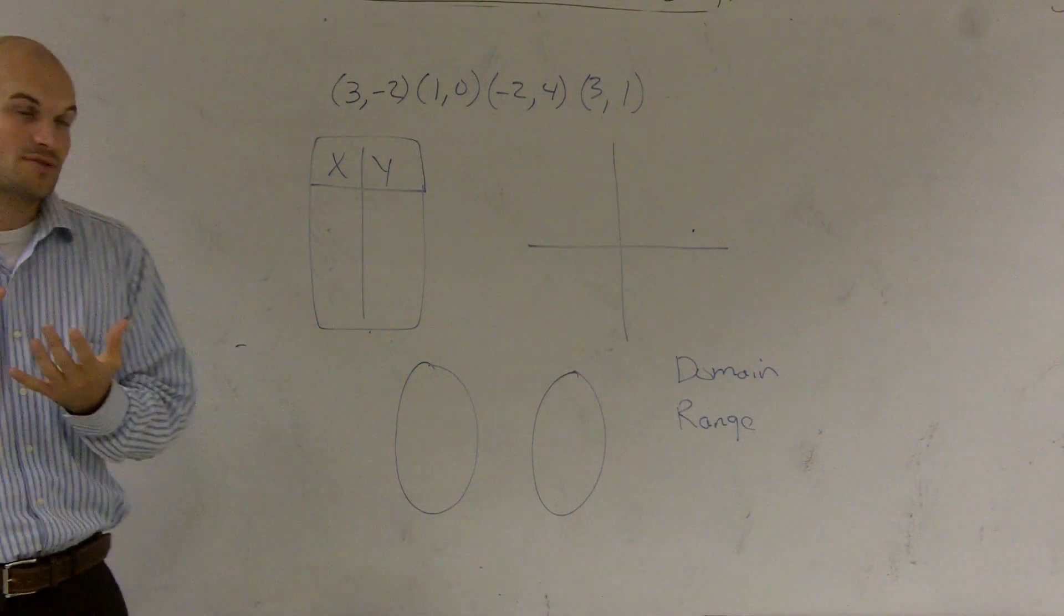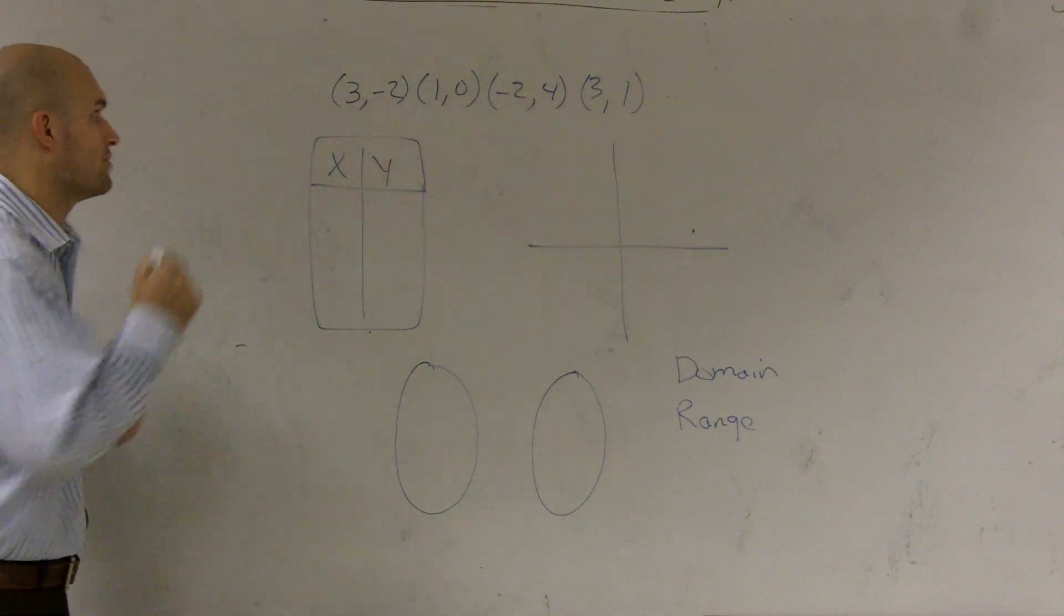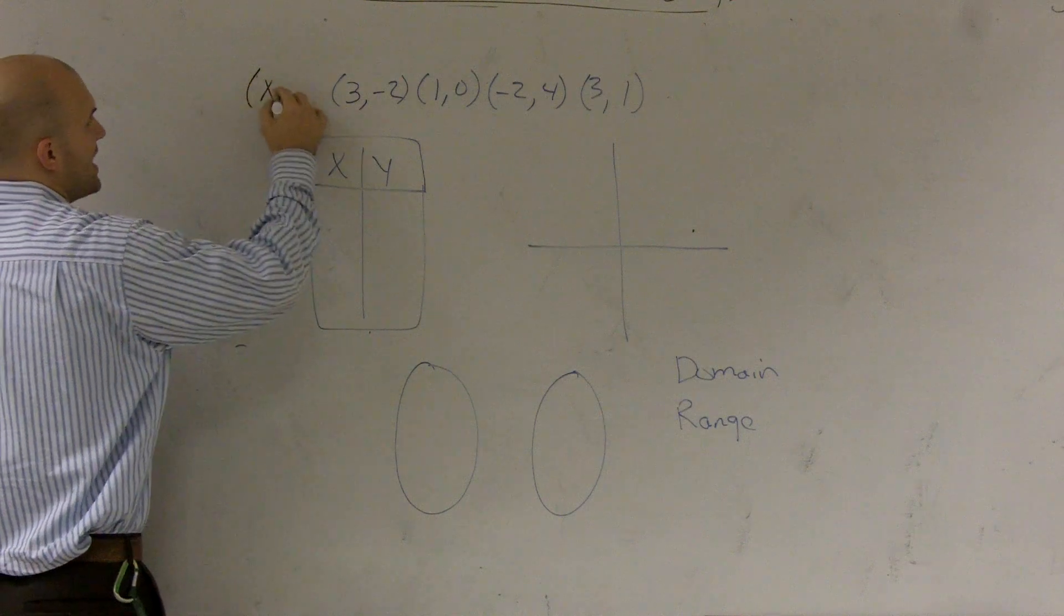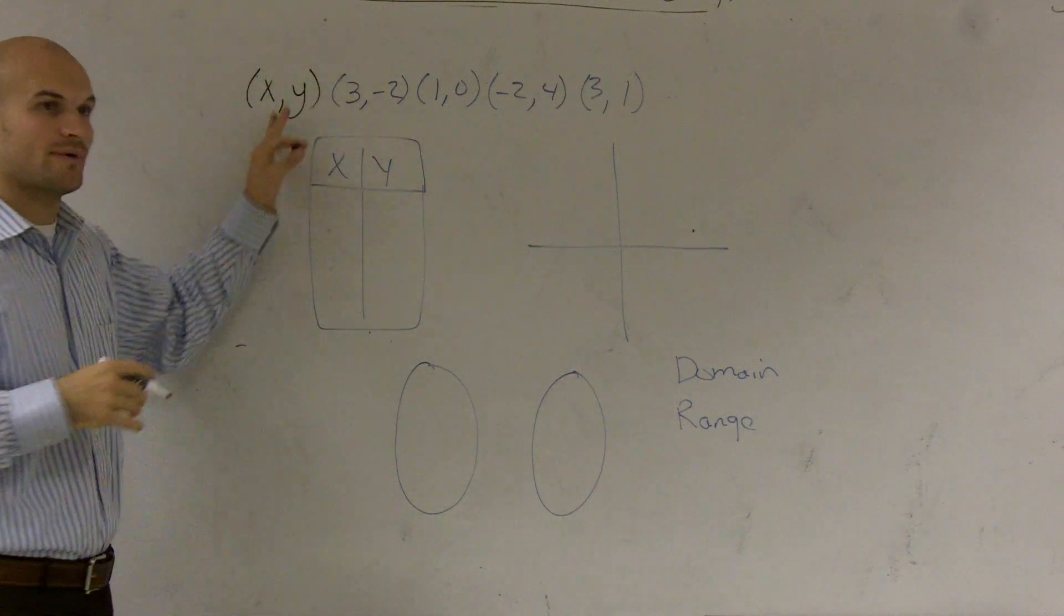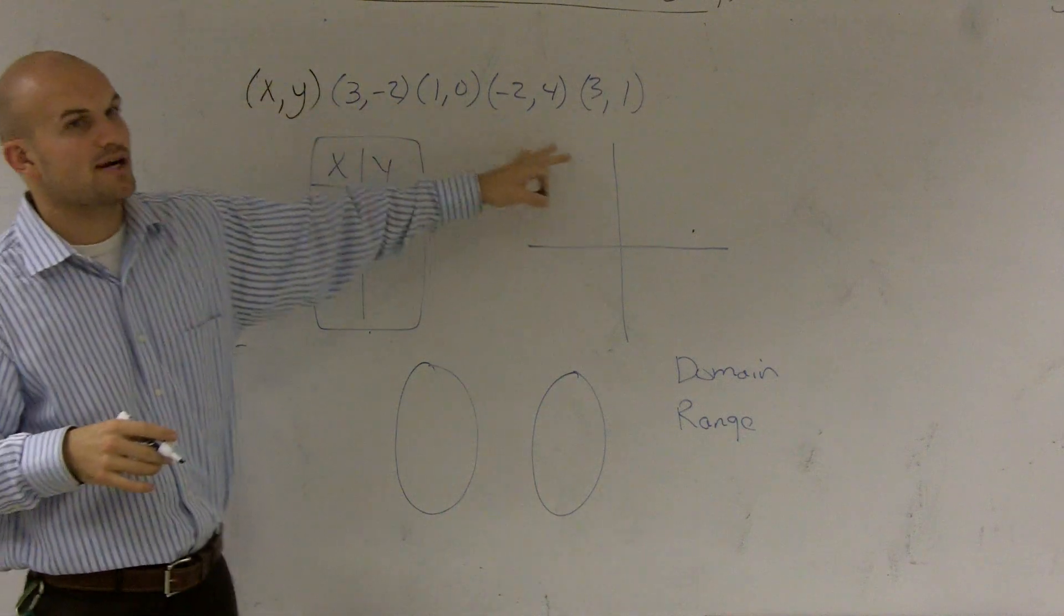The three different types of relations we talked about was one, ordered pairs, which they're already written in. Remember, an ordered pair we can write as an X and a Y, where we had X with the first coordinate, Y with the second coordinate.